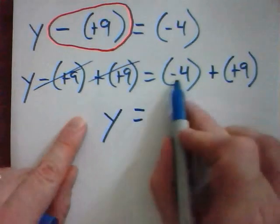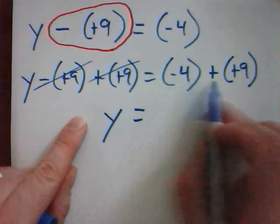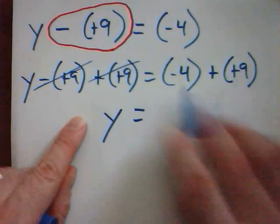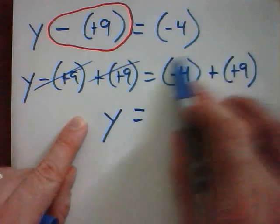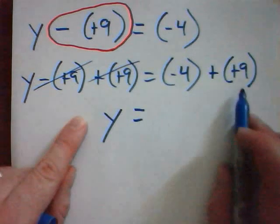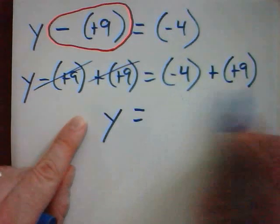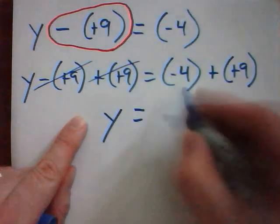Now, if I look at this and go negative 4 plus positive 9. If you're not very good at your integers, you can use your calculator to get this. Although we really need to learn our integers well later on. This will be positive 5.